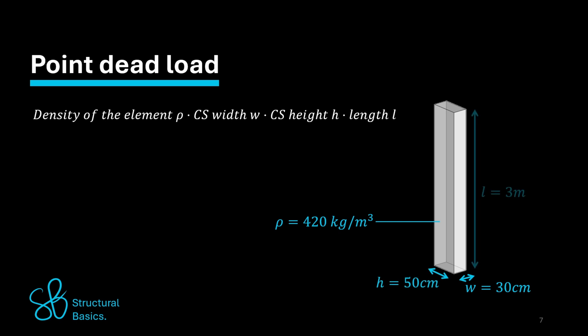and a length of 3 meters is calculated as 420 kg per cubic meter times 30 centimeters times 50 centimeters times 3 meters. And that equals 189 kg.